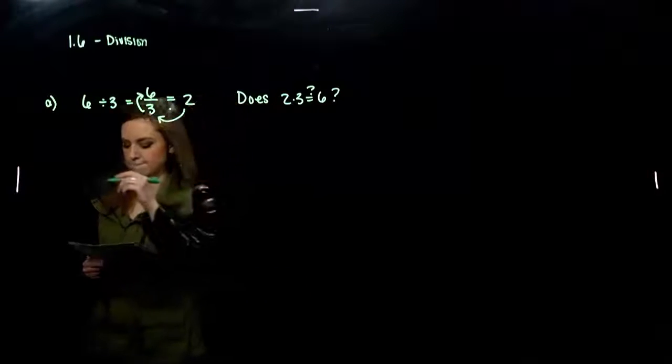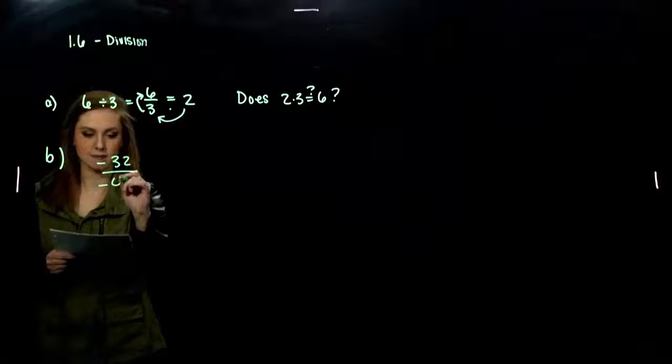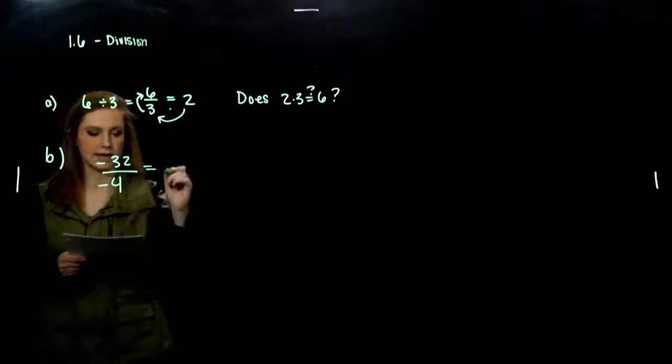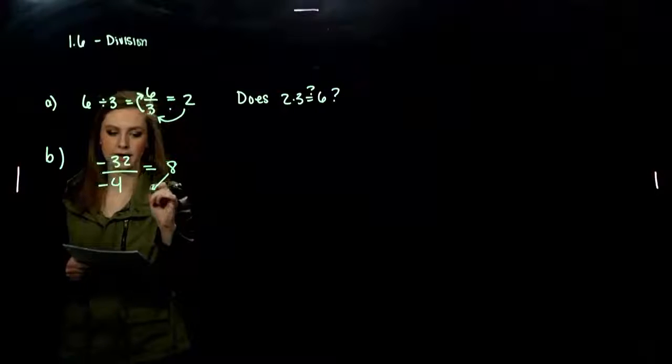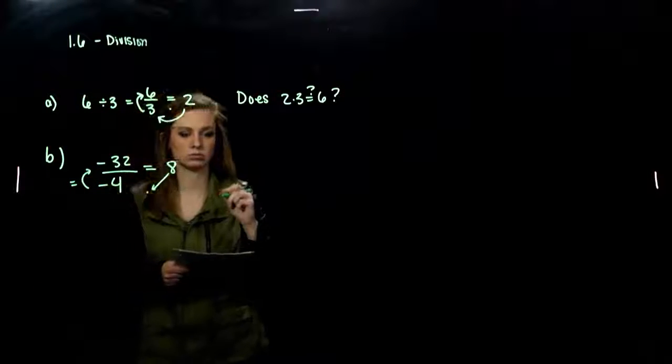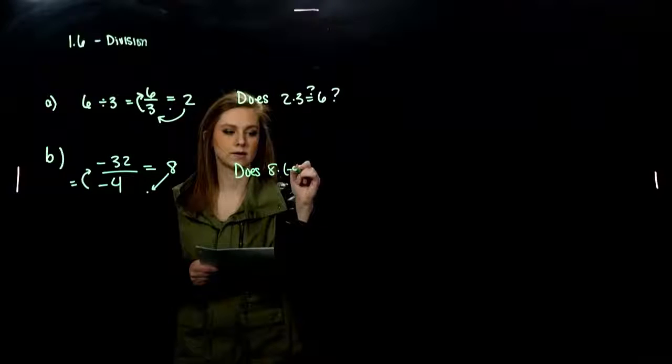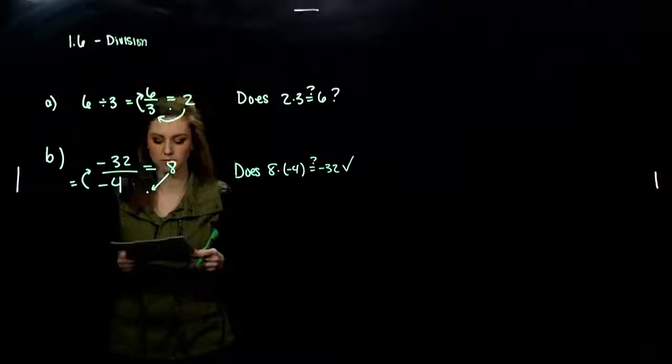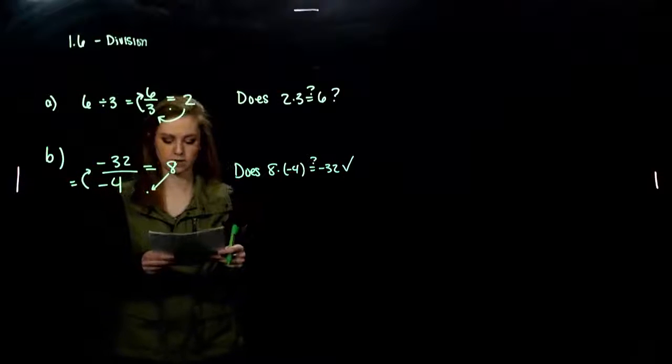Alright, so B. Hopefully you can see the pattern now. Negative 32 divided by negative 4. Negative divided by negative will give us a positive, 8 in this case. So we're asking, does 8 times negative 4 equal negative 32? Does 8 times negative 4 really equal negative 32? Yeah, it does. So we have a check, basically, to see if we've done division correctly.